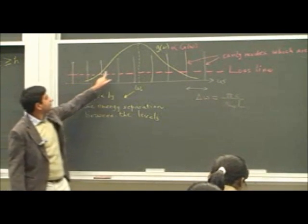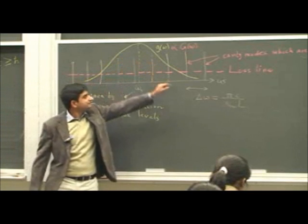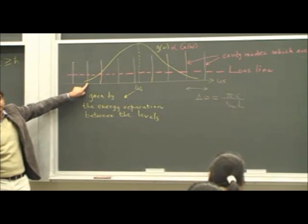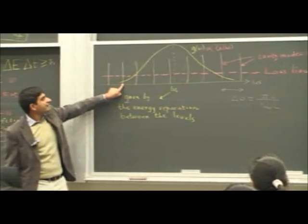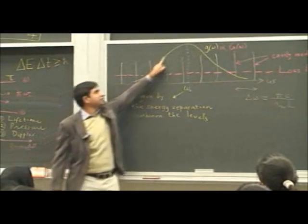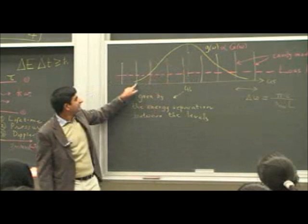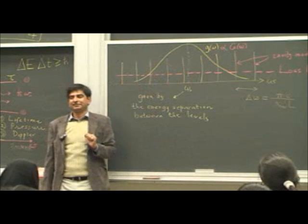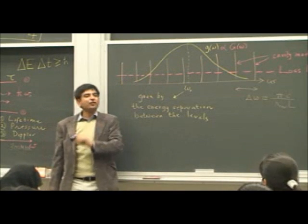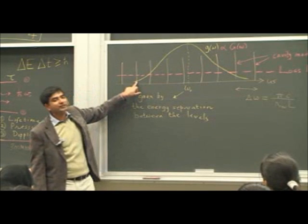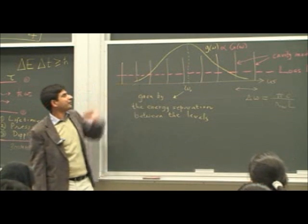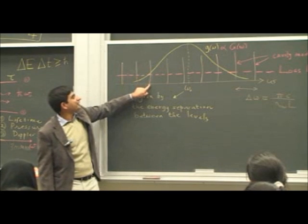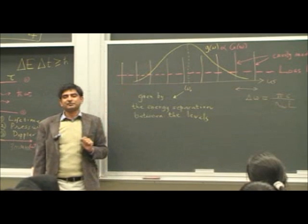Therefore, we look at this curve. Look at this transition, look at this cavity mode. This cavity mode lies within the line shape function, but the loss is higher than the gain. Therefore, sustained oscillations cannot occur at this frequency. Only for this frequency is the gain higher than the loss.